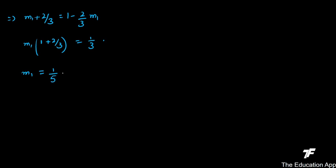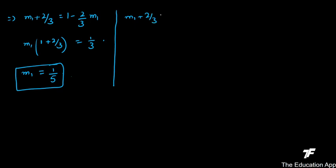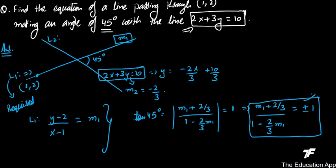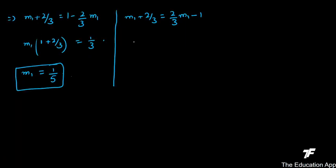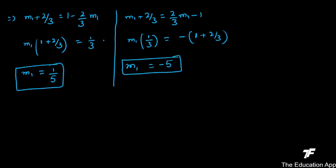Solving the first case (positive 1): m1 + 2/3 = 1 - (2/3)m1, which gives m1 = 1/5. For the second case (negative 1): m1 + 2/3 = -(1 - (2/3)m1), solving gives m1(1 - 2/3) = -(1 + 2/3), so m1 = -5.